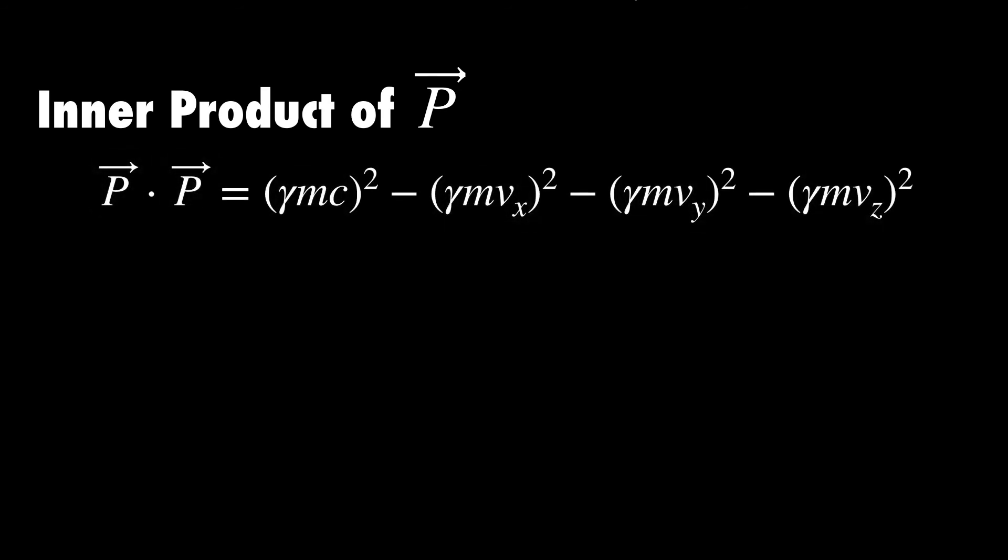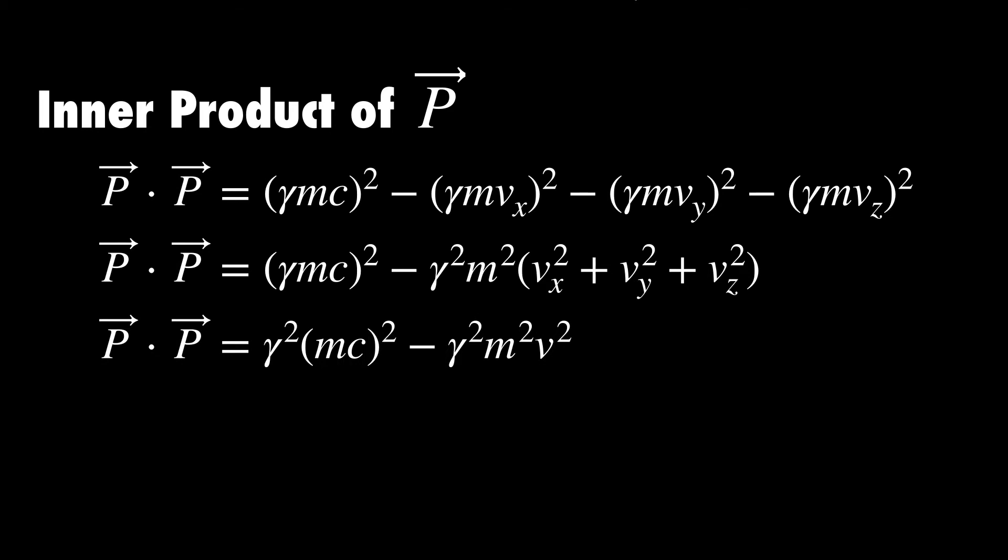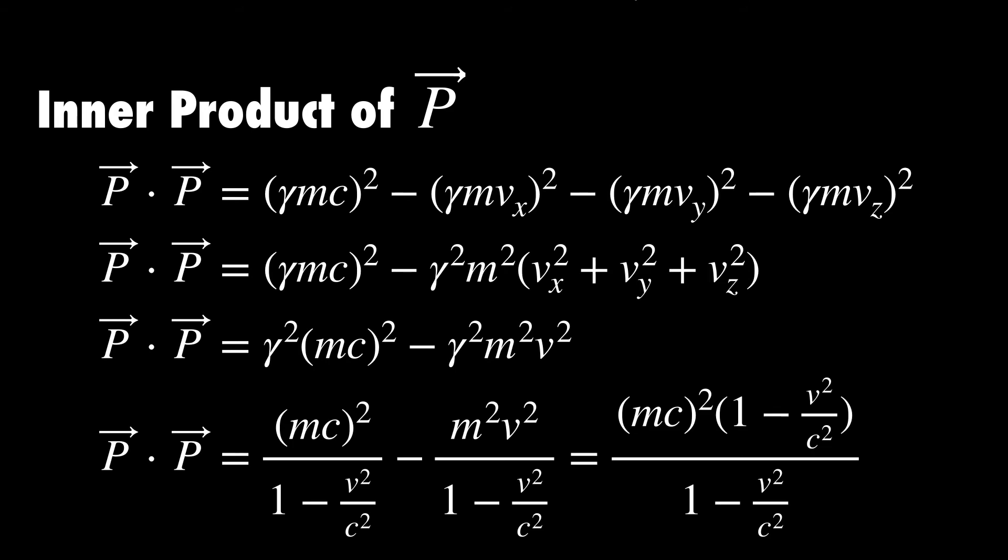If we look at the spatial components, we could factor out γ²m², and so in the brackets we're just left with the sum of the squares of all the components of velocity. But that's just the magnitude of the velocity squared by Pythagoras, as actually we just used a moment ago. Then let's write out the γ² in its full form and put everything on a common denominator. With some careful factoring, we notice that we can cancel out the 1 minus v/c² term on the numerator and denominator. This means that the inner product simplifies to (mc)², like all squared.